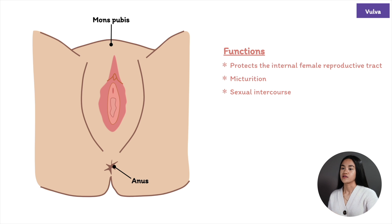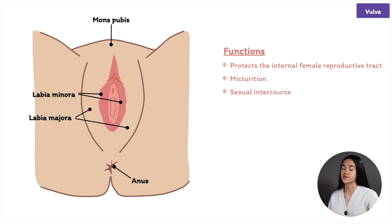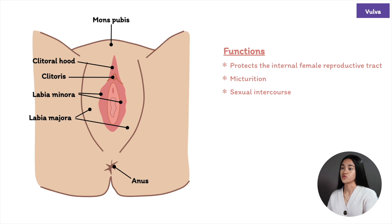The mons pubis is covered by hair-bearing skin. The labia majora are two external hair-bearing skin folds that extend from the mons pubis downward. The labia minora lie within the labia majora — these inner skin folds are hairless and they protect the opening of the urethra and the vagina.